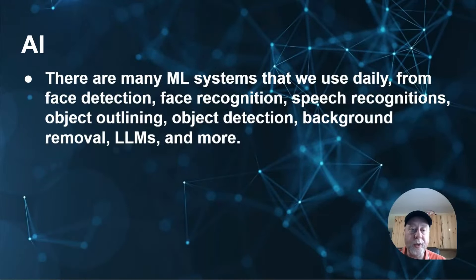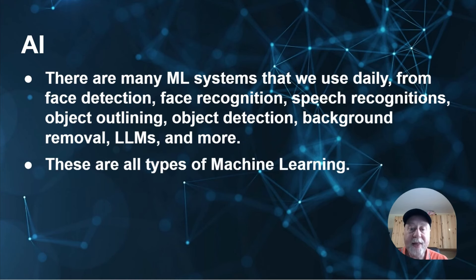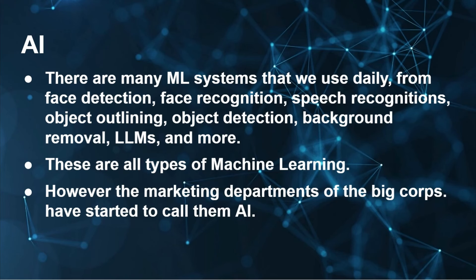There are many ML systems we use daily: face detection, face recognition, speech recognition, object detection, background removal, LLMs, and more — on our smartphones, PCs, and home assistants. These are all types of machine learning, not AI. But what has happened is that marketing departments decided 'machine learning' doesn't sell well, so these things — which are really just machine learning trained on data to recognize faces or outline objects — now get called AI.